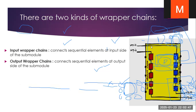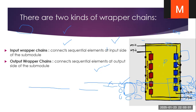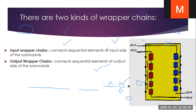There are two kinds of vapor chains. One is the input vapor chain and the other one is the output vapor chain. In between we have the core logic sub-module. We will move on to the next session to know more in depth.